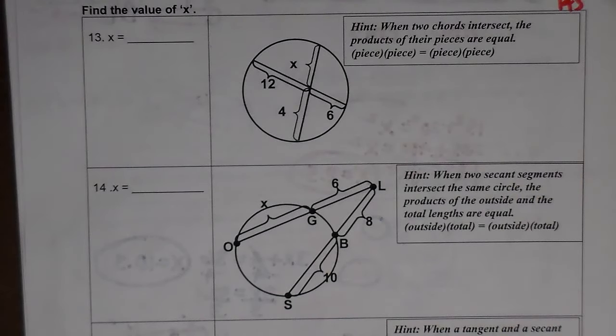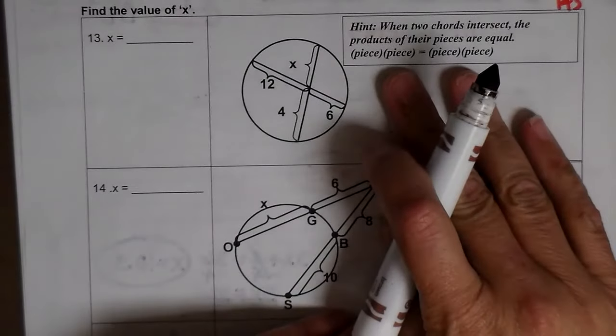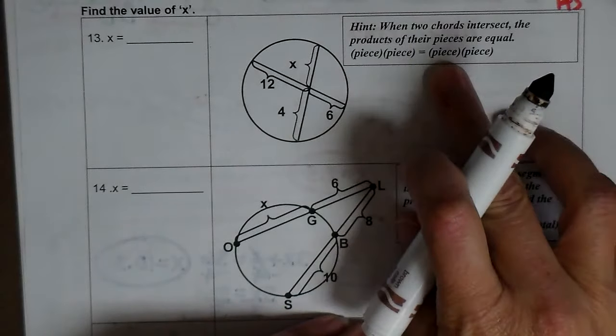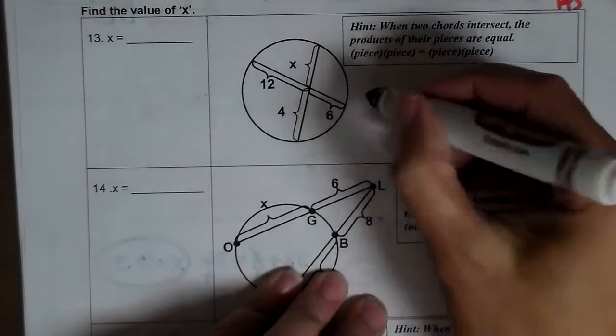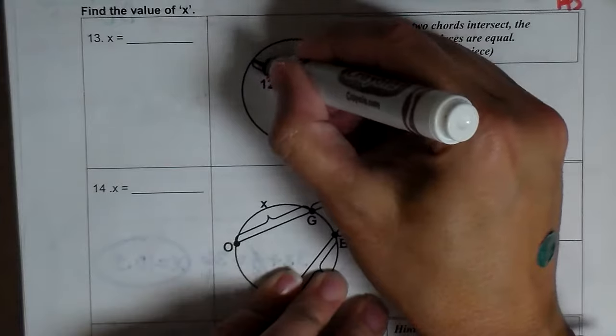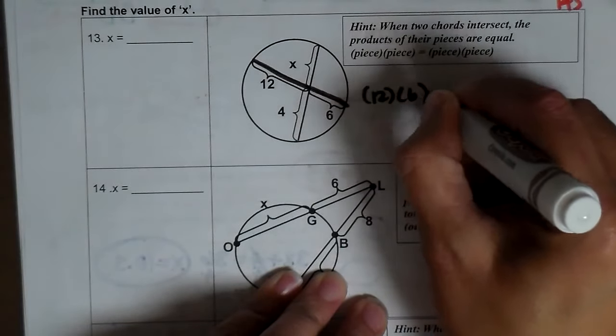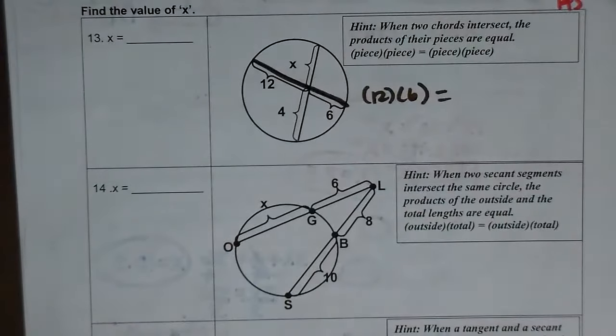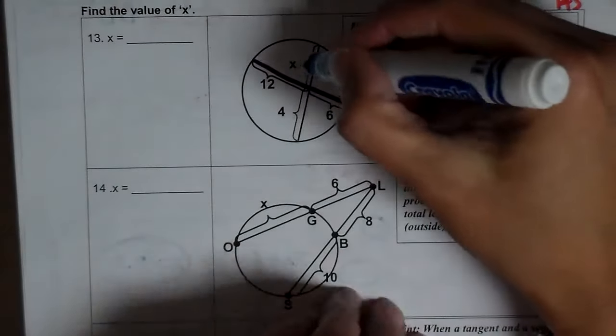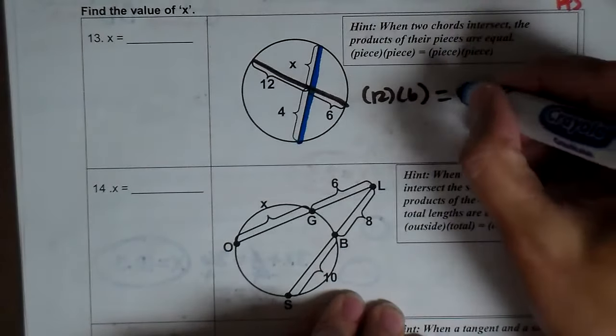Number 13. When you have two chords intersect, their products are equal. Piece times piece equals piece times piece. So this chord, 12 times 6 equals this chord, 4 times x.